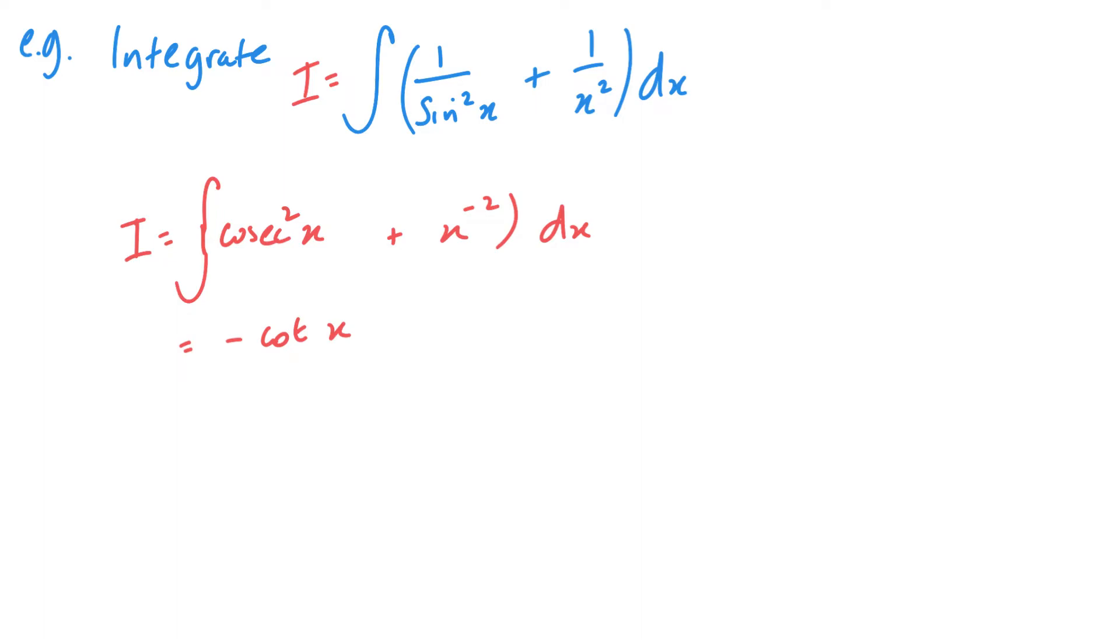Now my second part is quite easy. I'm going to add 1 to the power and divide by that power and then plus c. So I've got minus cot x minus x to the minus 1 plus c, or a better way to write it will be minus cot x minus 1 over x plus c. These two lines are obviously the same. I'm only doing this second line because one, it's nicer to write it without the negative power, but more importantly, it's in the same form of the question.